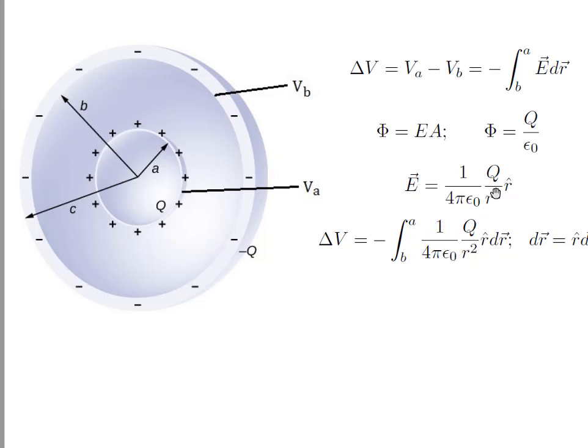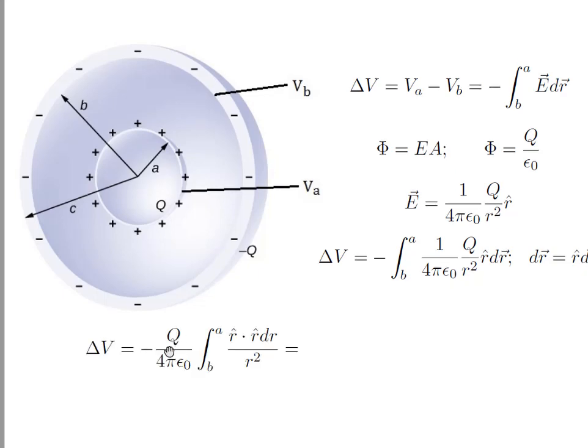1 over 4 pi epsilon 0 Q divided by r squared times r unit vector and dr. The potential difference equals minus Q over 4 pi epsilon 0, integral from b to a of r dot r dr divided by r squared.